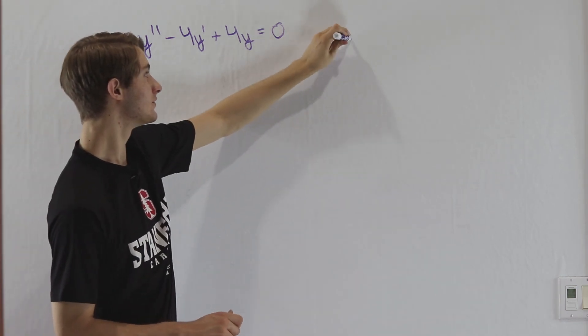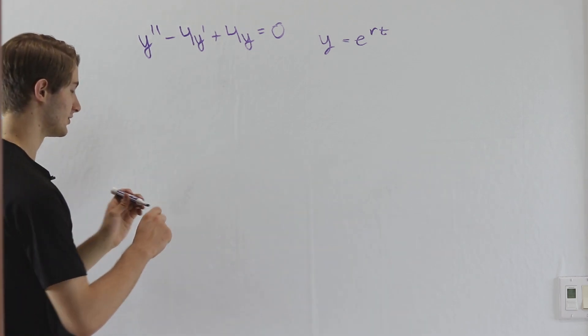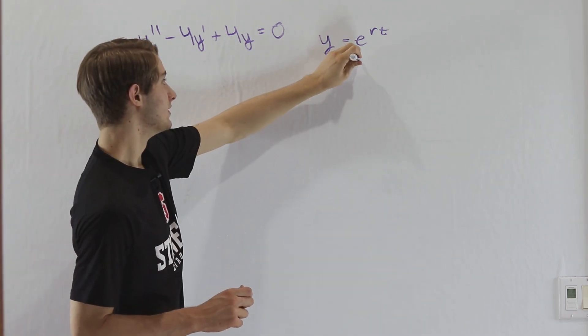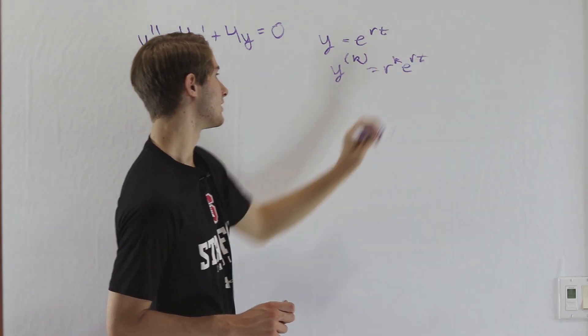We know in order to solve this equation, we want to guess that the solution is y equals e to the rt and then solve for r. We know that y, the kth derivative, is going to be r to the k times e to the rt.